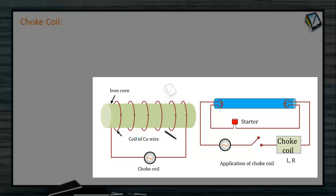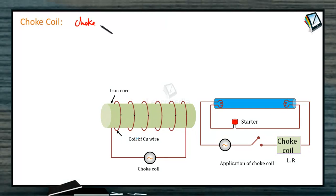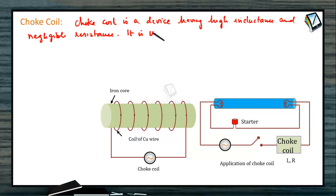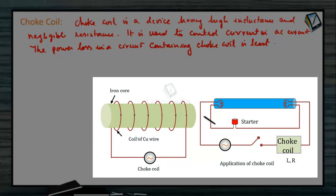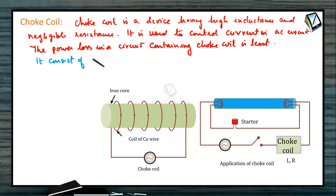A choke coil is a device having high inductance and negligible resistance, used to control current in an AC circuit and used in fluorescent bulbs or fluorescent tubes. The power loss in the circuit containing a choke coil is the least. It has an iron core over which a coil of copper wire is wound. It is basically an LR circuit. Copper wire is used to reduce the resistance, and soft iron is used to improve the inductance. It consists of a copper coil wound over a soft iron laminated core.